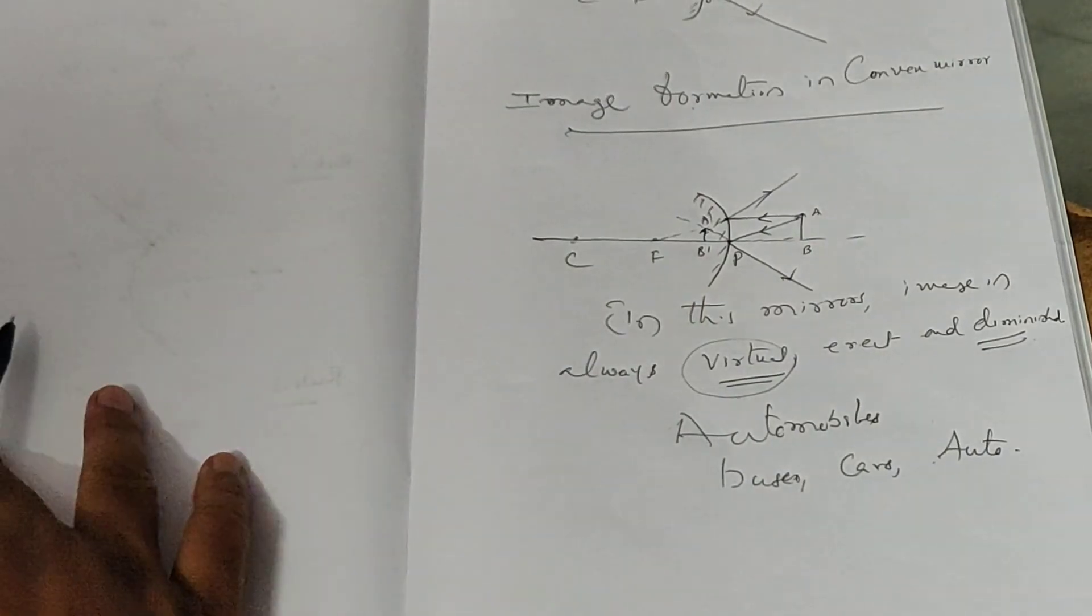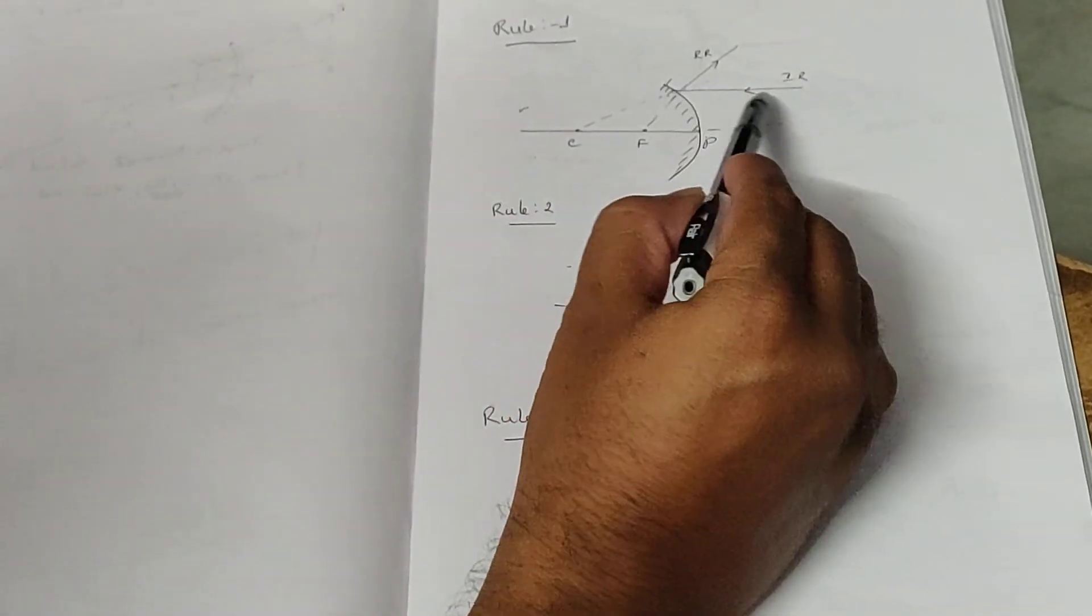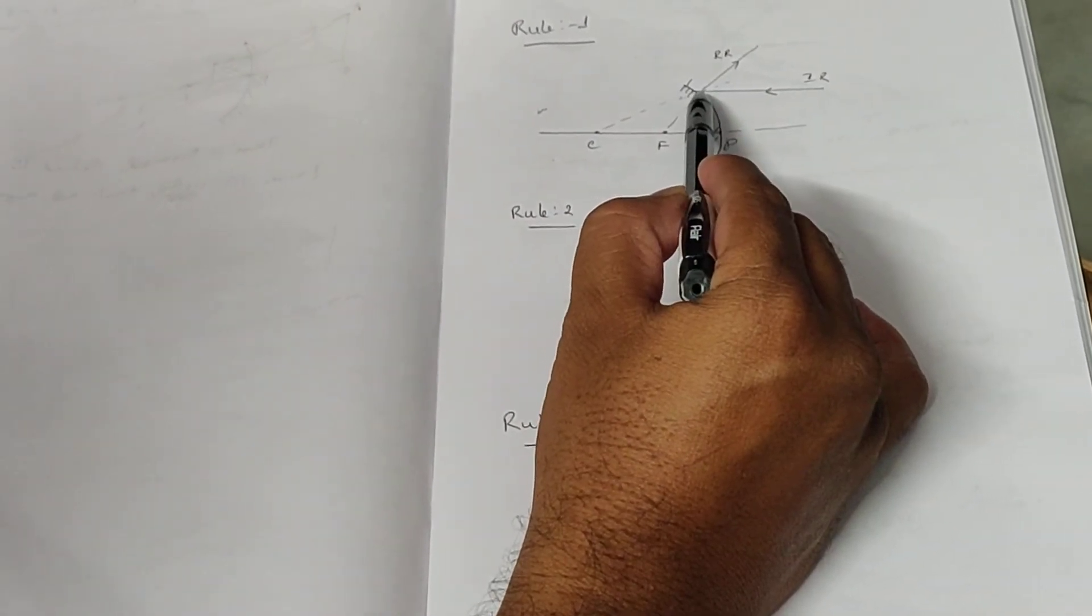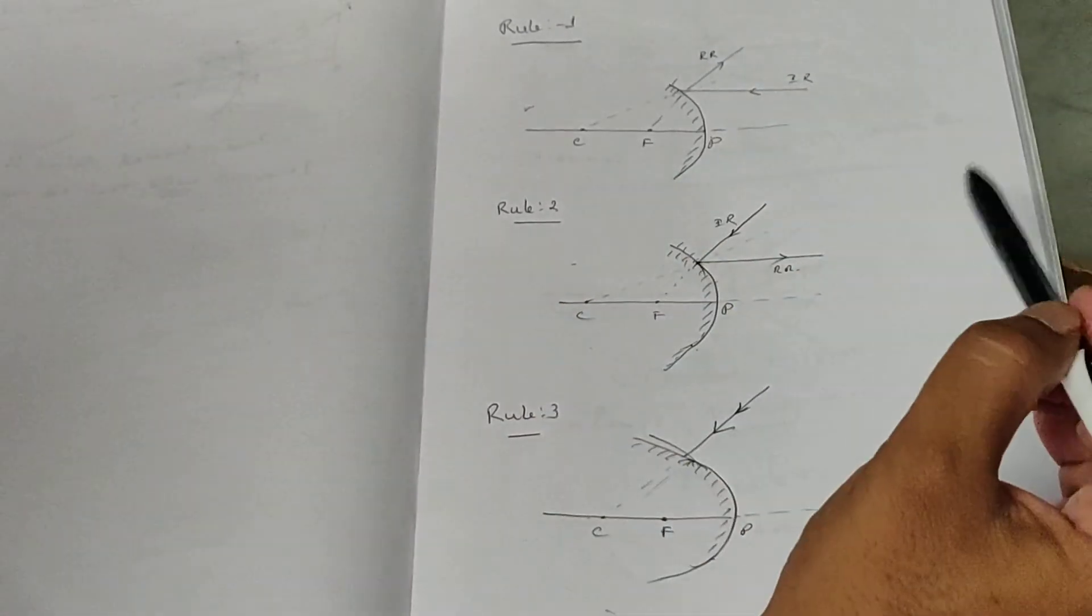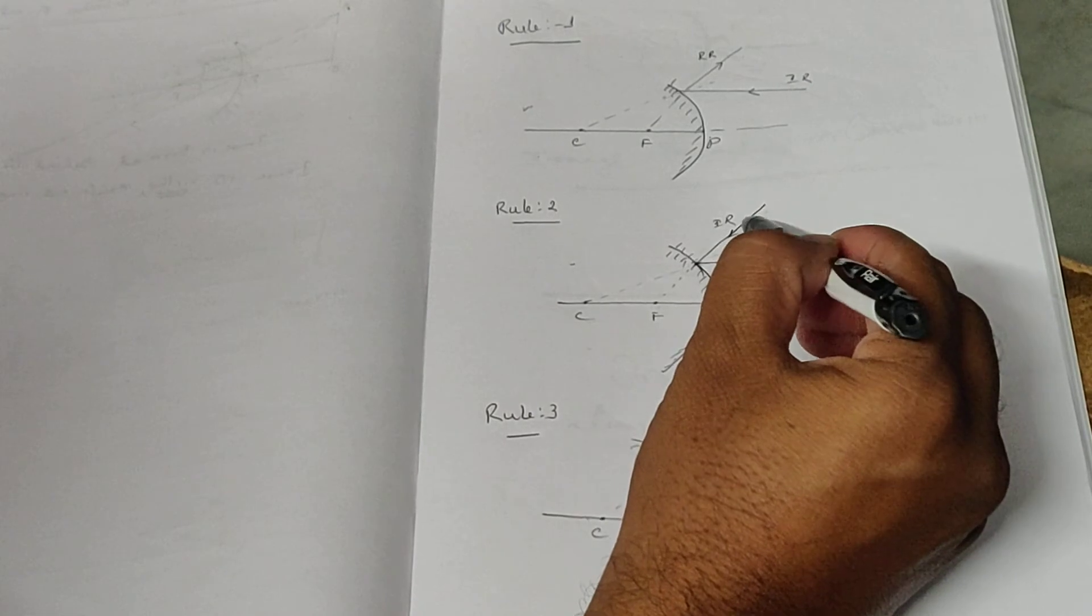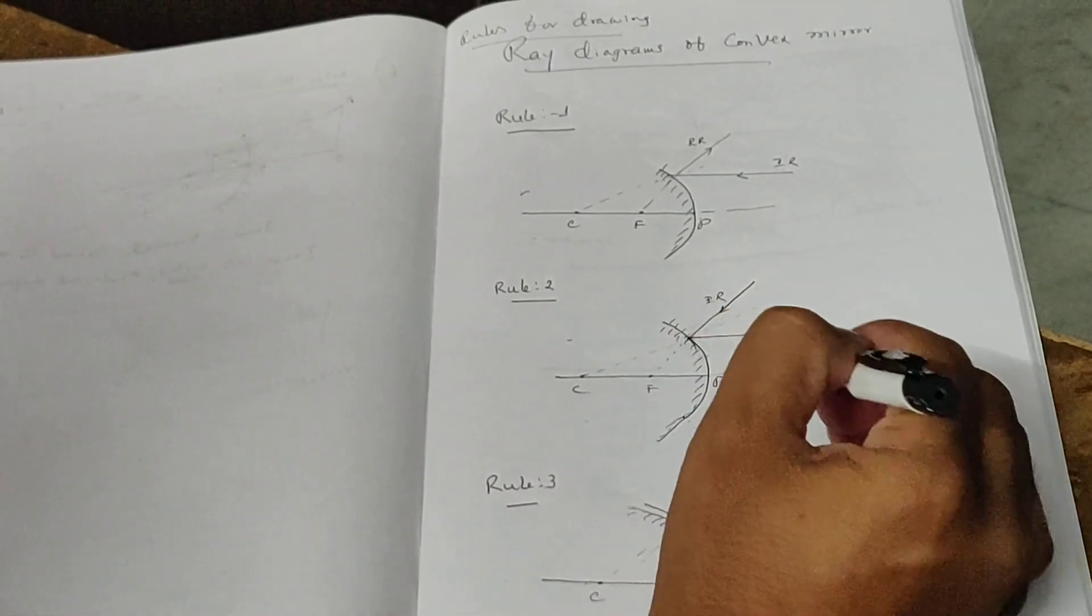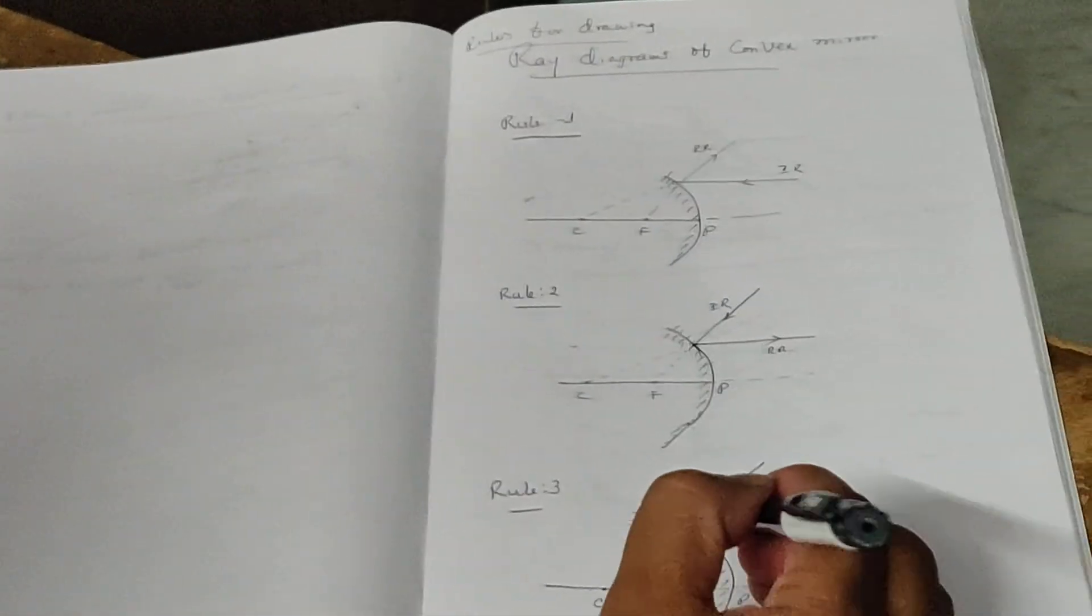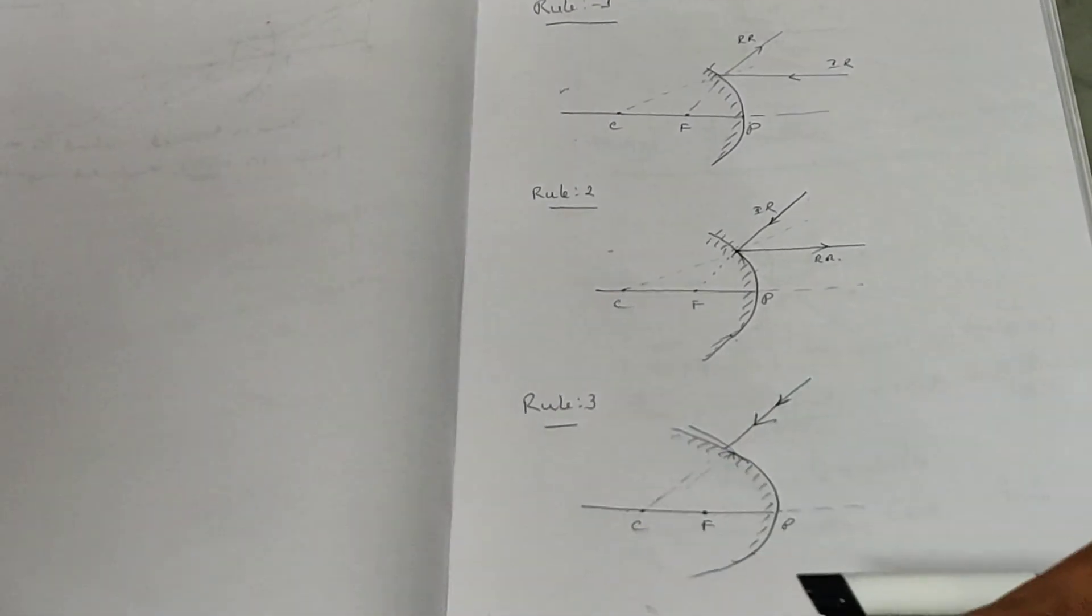Actually, there are four rules for convex mirror. Rule one says that a parallel beam of light rays, after reflection, will appear to be coming from focus. Rule two: any light ray coming toward focus will travel parallel to the principal axis. Any light ray coming toward the center of curvature reflects back in the same direction.